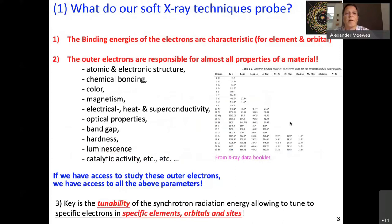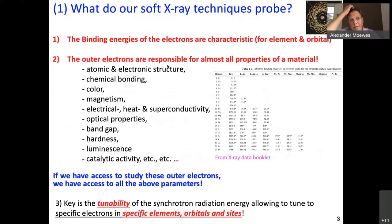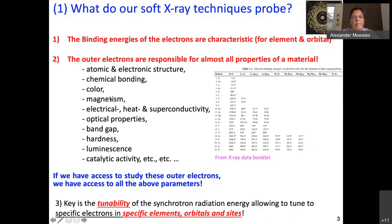What do our soft X-ray techniques probe? As shown here as an excerpt from the X-ray data booklet, the binding energies of the electrons in different elements are characteristic for each element and also for the orbital. If you know that the outer electrons are responsible for almost all properties of any material, then it is clear that if you have access to study these outer electrons, you have access to all of these parameters — including such different things as color, chemical bonding, magnetism, band gap, hardness, and luminescence.